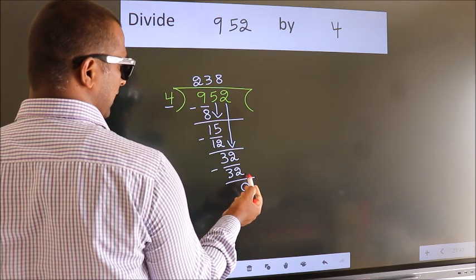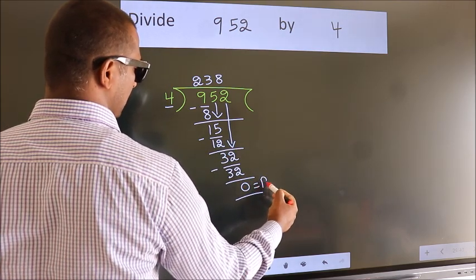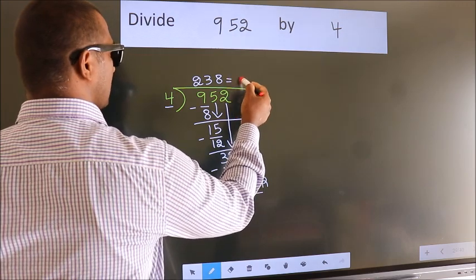No more numbers to bring it down. So we stop here. This is our remainder. This is our quotient.